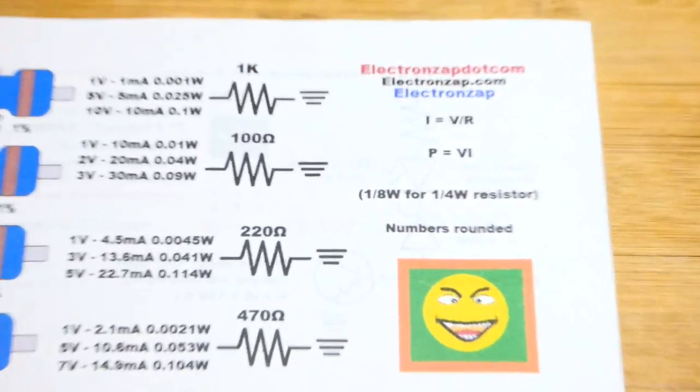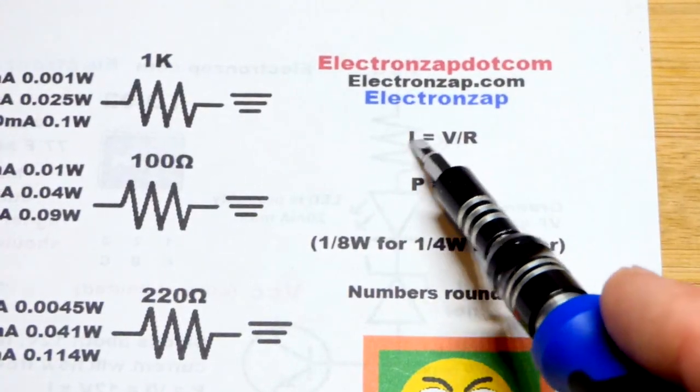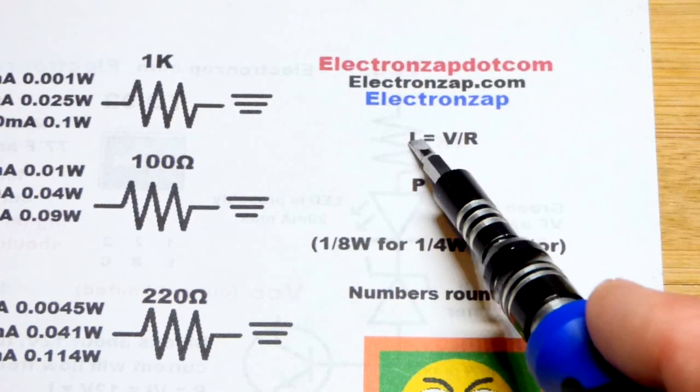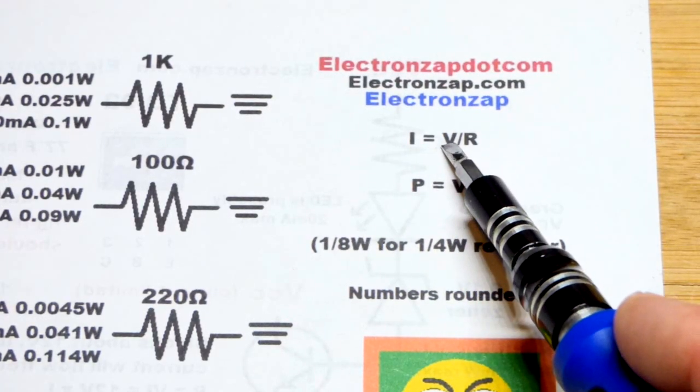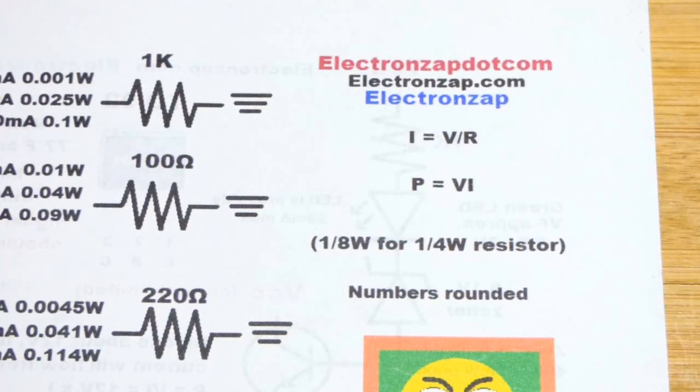The main thing is resistors have the basic electrical property that the current that's going to flow through them in amps is the voltage across them divided by their resistance in ohms. So that's voltage in volts.